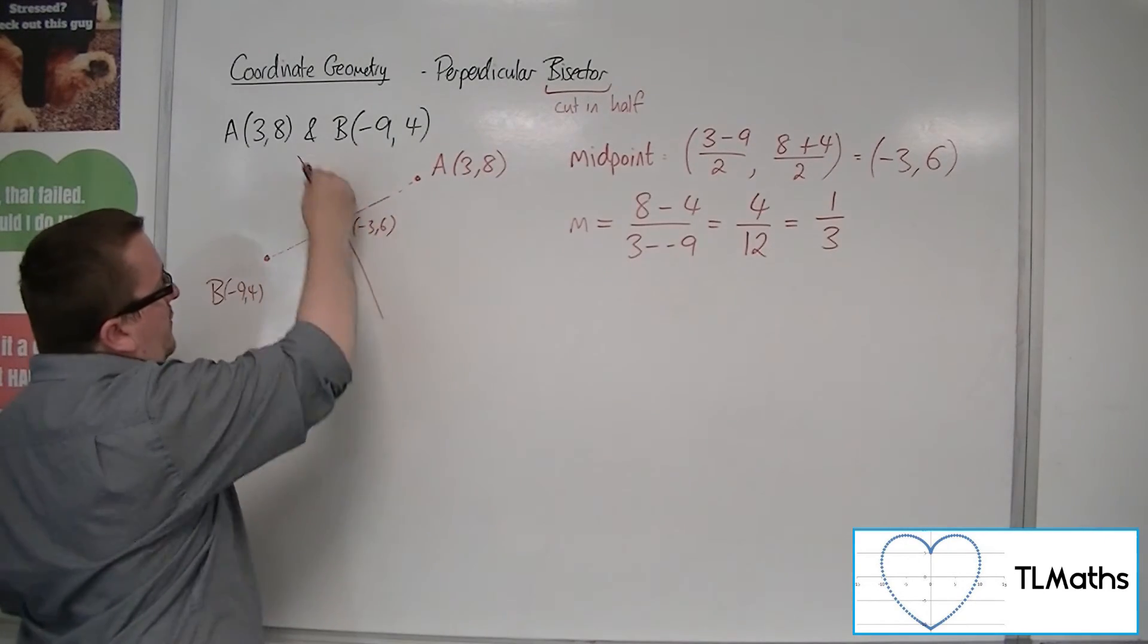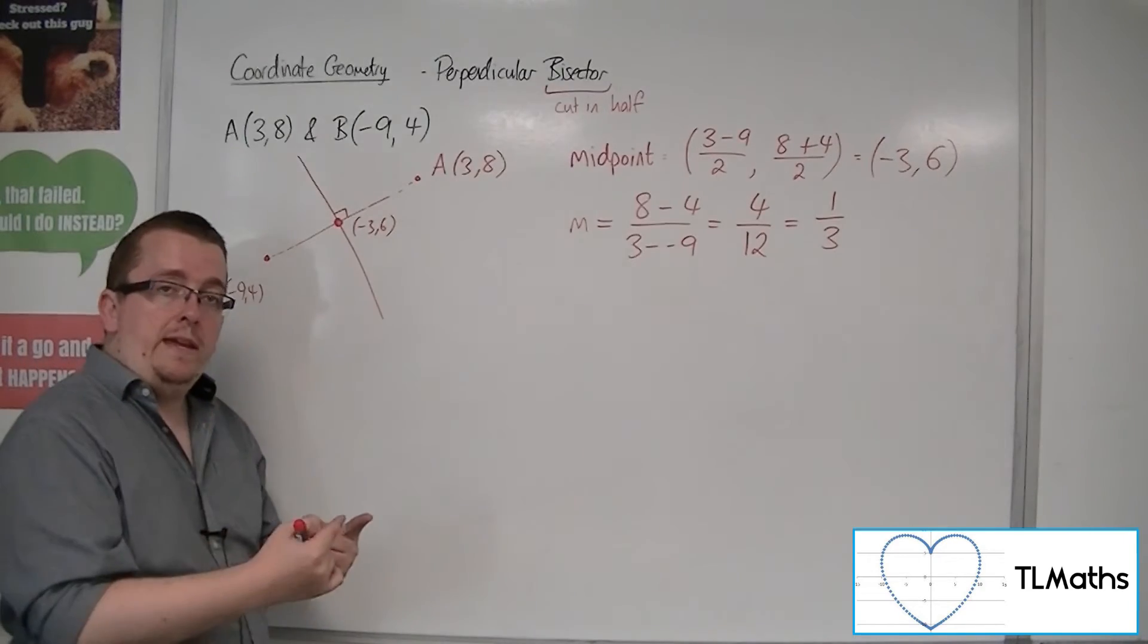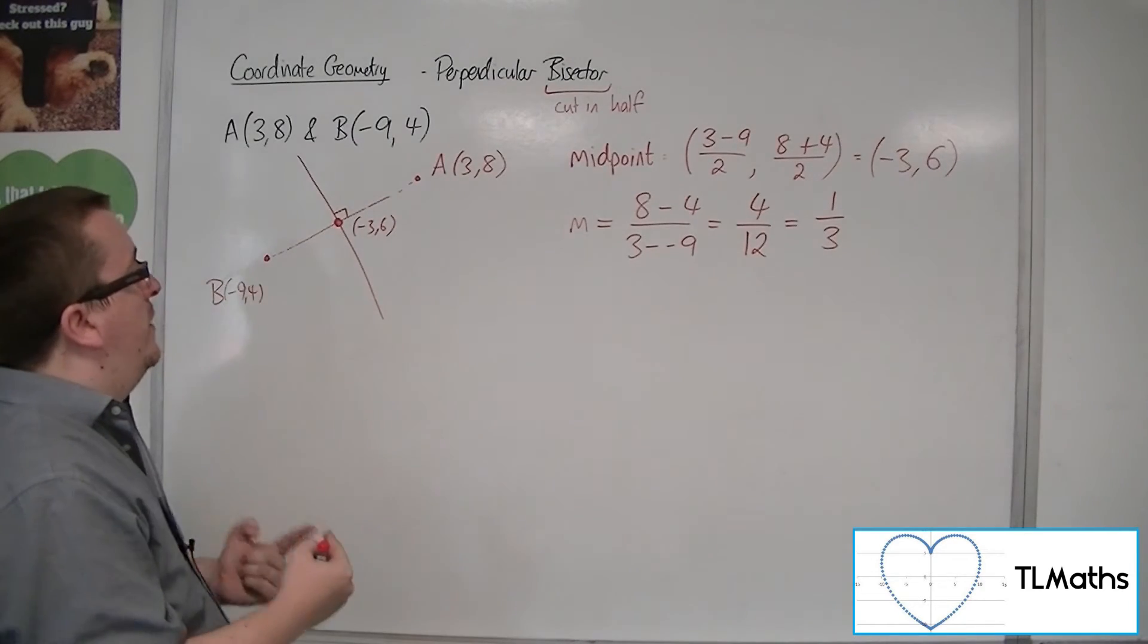So that means that the gradient of this chord is 1 third, so the gradient of the perpendicular line will be minus 3, the negative reciprocal of 1 third.